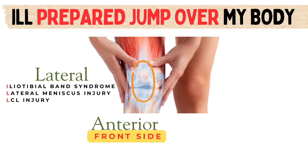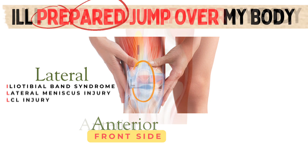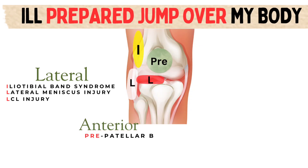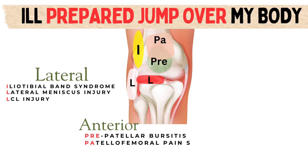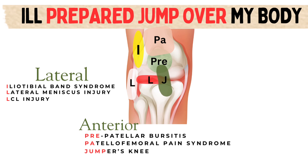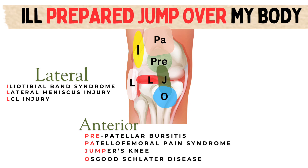The 'prepared jump over' part includes causes of anterior or front knee pain. The word 'prepared' is divided into two portions: pre and impaired. 'Pre' stands for prepatellar bursitis, presenting with localized swelling and pain over the patella or kneecap. 'Impaired' represents patellofemoral pain syndrome with poorly localized pain under or around the patella. 'Jump' is for jumper's knee or patellar tendonitis with pain localized to the inferior pole of the patella. The letter O in 'over' represents Osgood-Schlatter disease, a common cause of knee pain and tenderness over the tibial tubercle in adolescence.